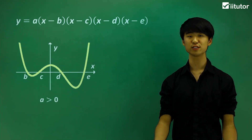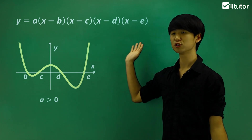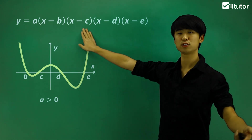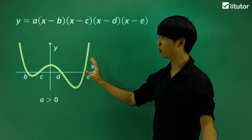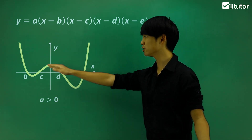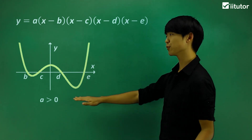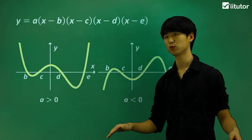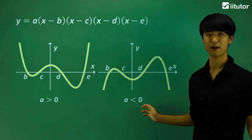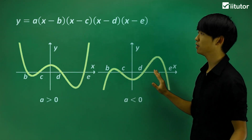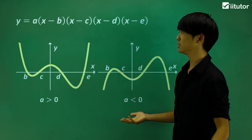We're going to learn how to sketch quartic graphs. A quartic graph means we're going to have four roots, or an equation with x to the degree of 4. The general quartic graph looks like a nice W shape when a is greater than 0 — a positive graph — and an upside-down shape when a is less than 0, a negative graph. Knowing this, let's sketch some questions.